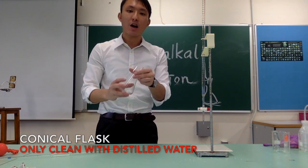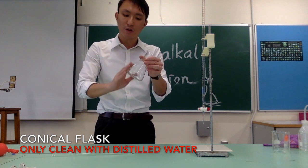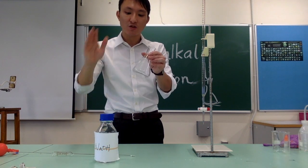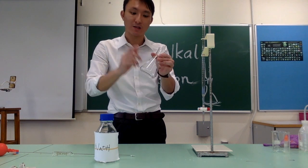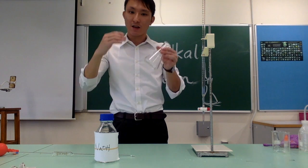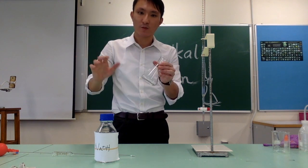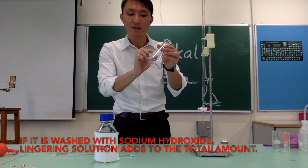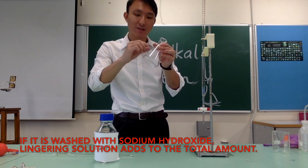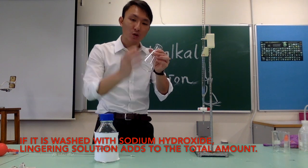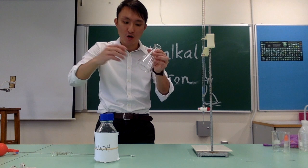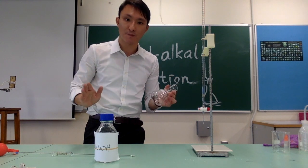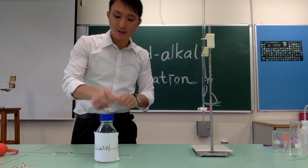This is the general rule, except for one apparatus: the conical flask. We only clean the conical flask with distilled water, even though it is going to contain the sodium hydroxide transferred by the pipette. We do not rinse it with sodium hydroxide because our objective is to transfer exactly 25 cm³ of sodium hydroxide accurately. If you rinse it with sodium hydroxide, there will be some lingering sodium hydroxide that adds to the total amount — so the total is not only 25 cm³ from the pipette. We only rinse the conical flask with distilled water.